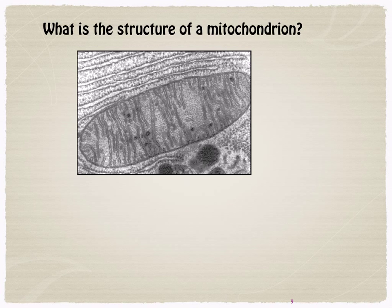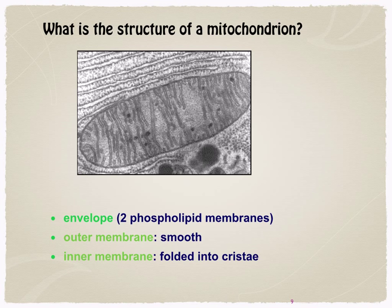The mitochondrion is the site of respiration and is very important in eukaryotes — it is the site of the Krebs cycle and the electron transport chain. Mitochondria are very small, about 0.5 to 1 micrometer in diameter. They are surrounded by a double membrane called the envelope, consisting of a smooth outer membrane and an inner membrane folded into structures called cristae, which increases the surface area for electron transfer.